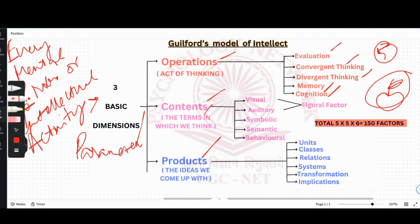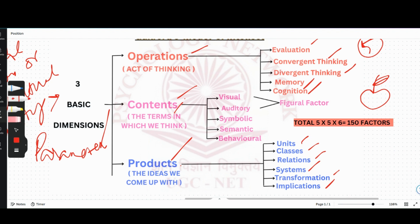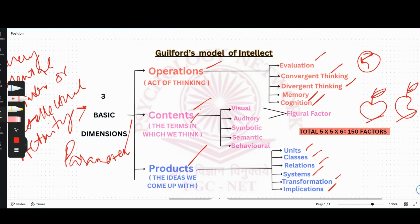Now, what is the product? Products are the ideas which we come up with, like units, classes, relations, systems, transformations, and implications. Suppose a very simple question: what is the similarity between an apple and a mango? When we are thinking, we think okay, what is an apple? Apple is a fruit. What do we eat? These are things which we eat. Then what are they? They are fruits.